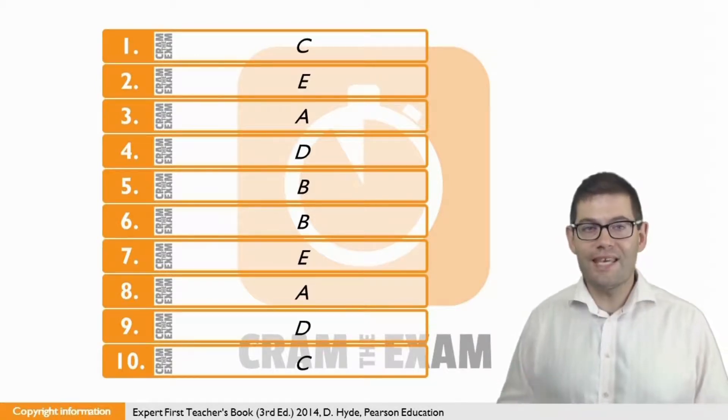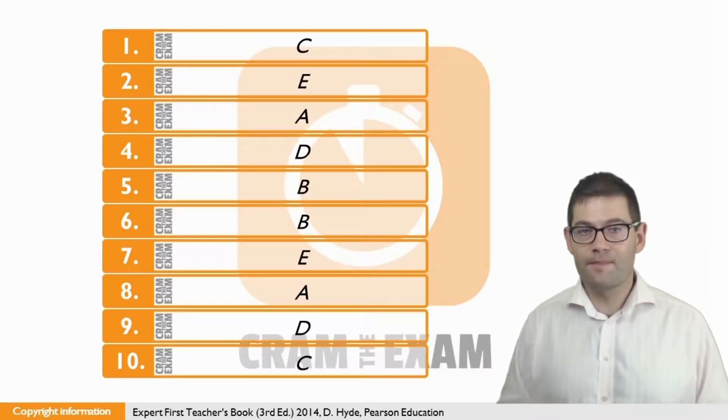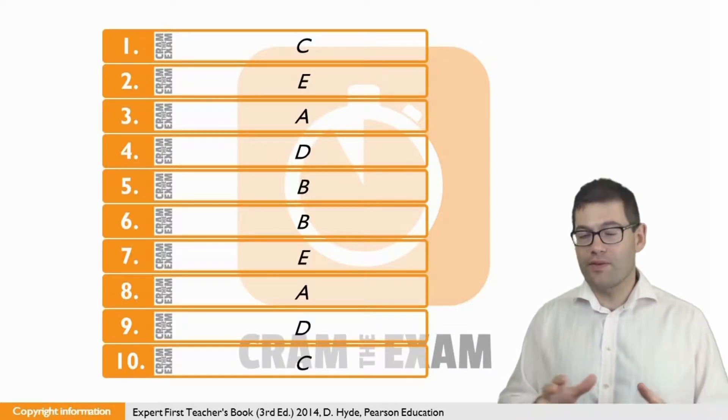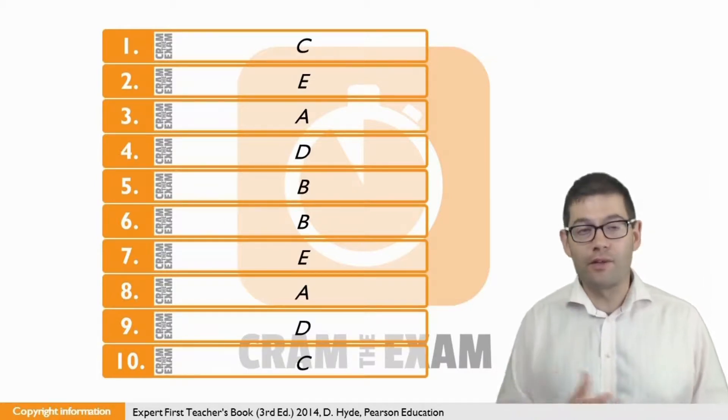For question seven, the answer is E. Laura contributes to society in non-financial ways. Contributing in a non-financial way can be seen in E, when Laura says, halfway through the text, that they do their fair share in other ways by giving blood and volunteering.